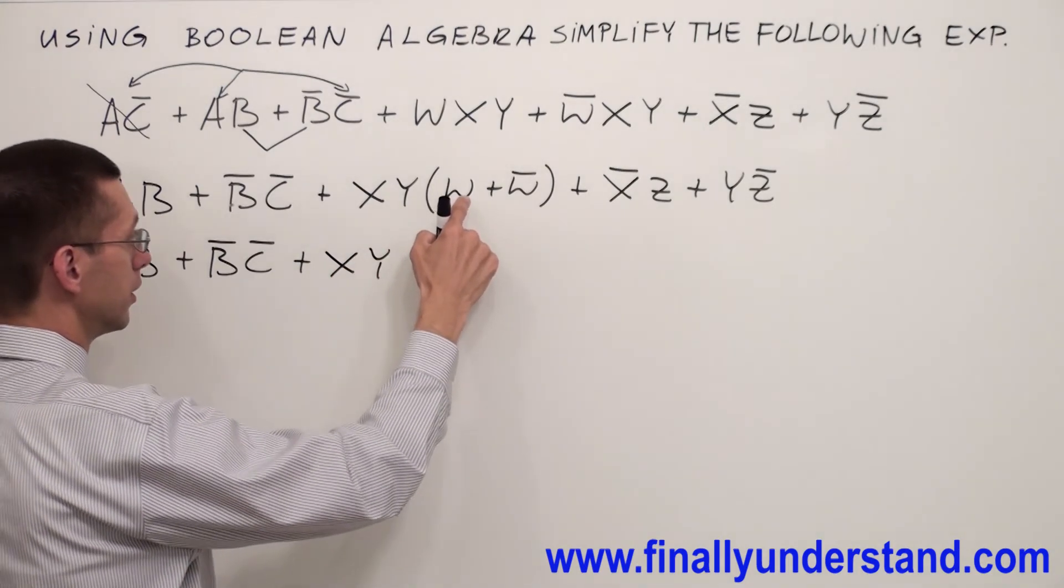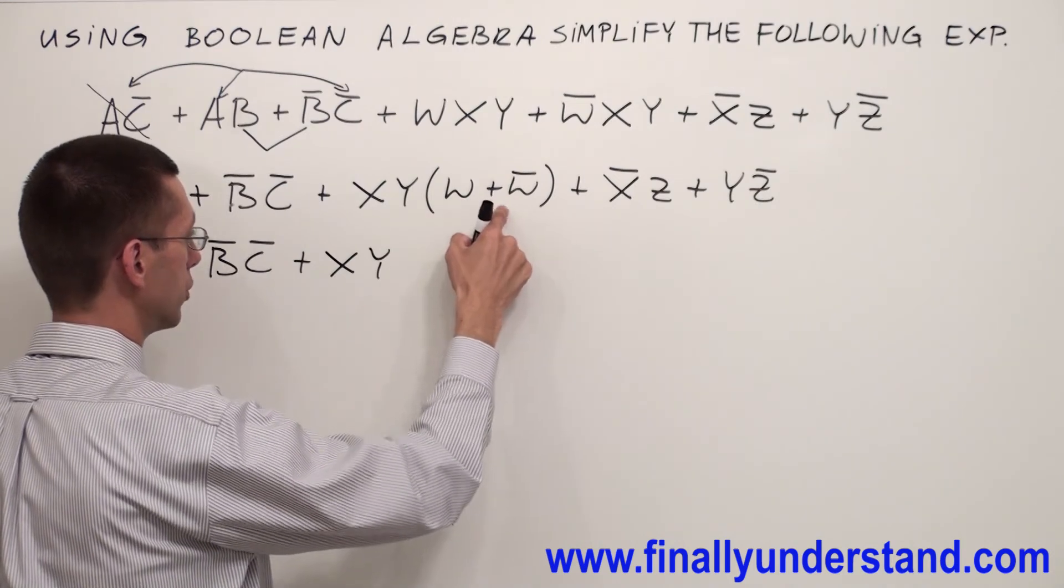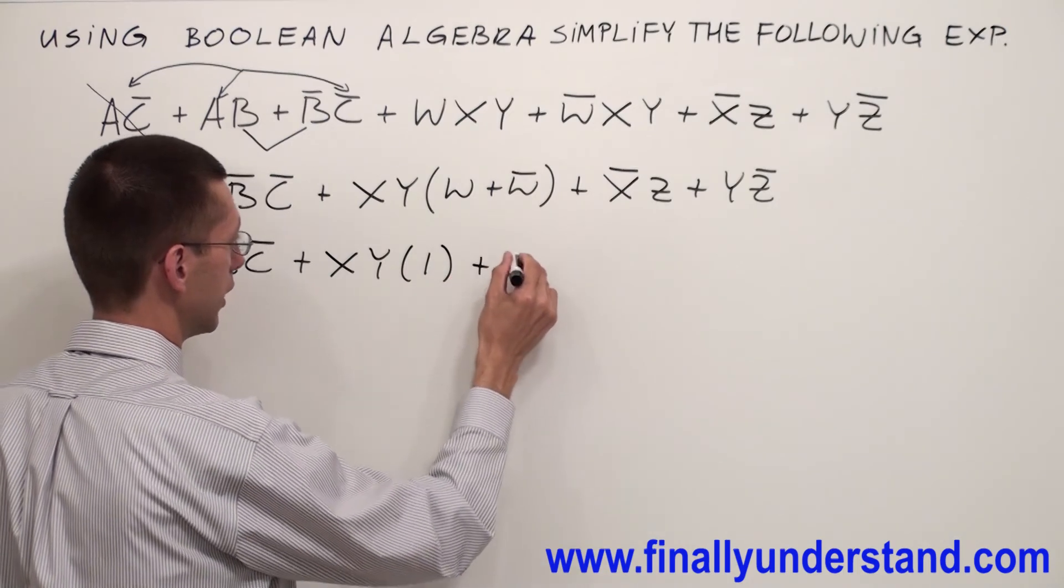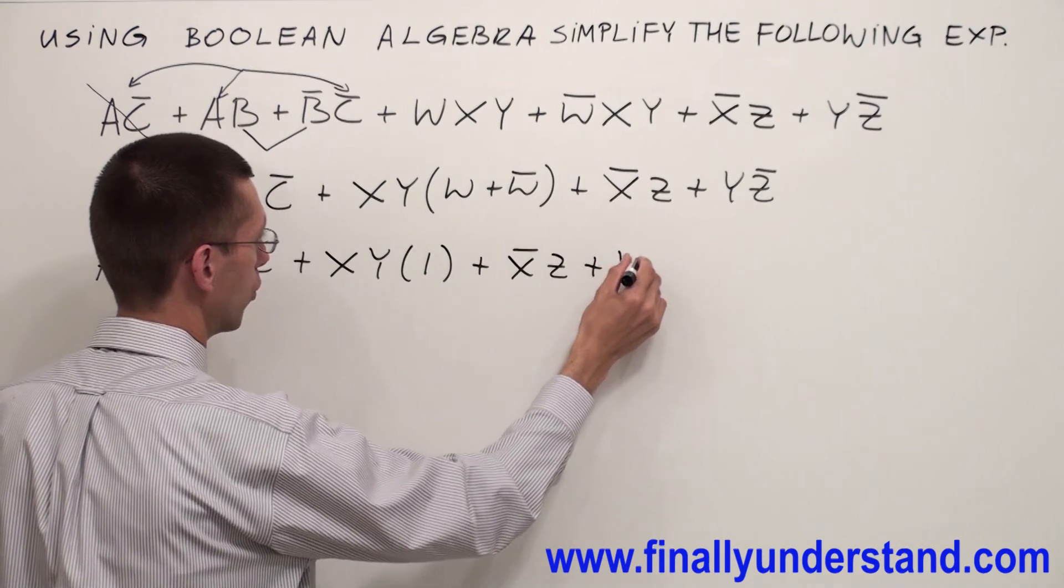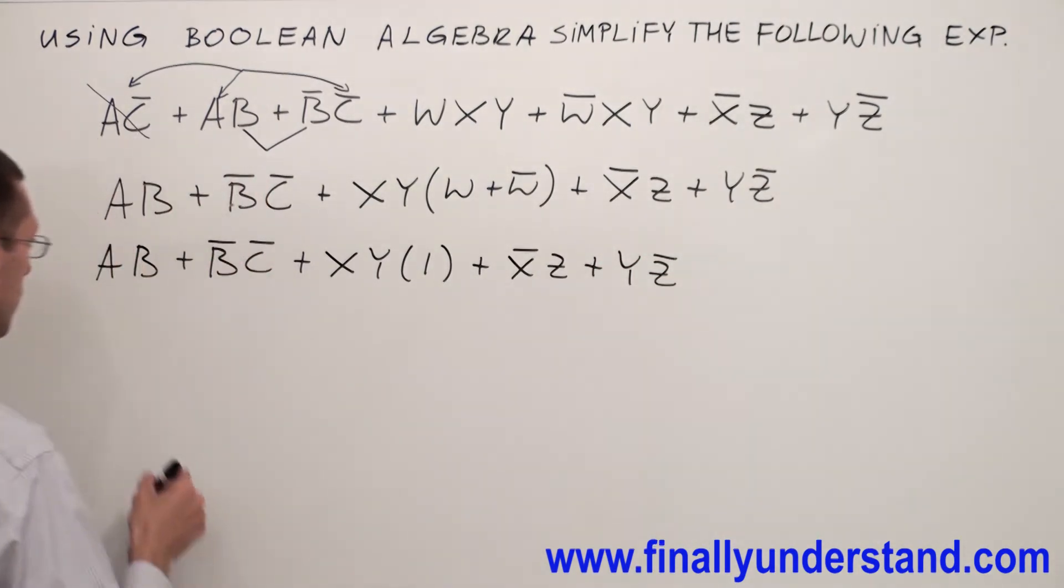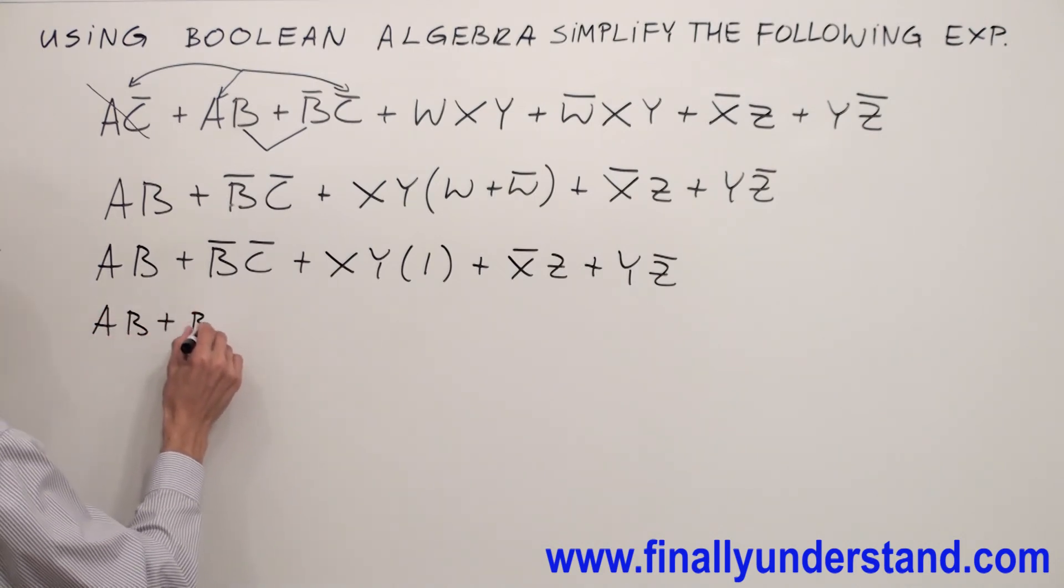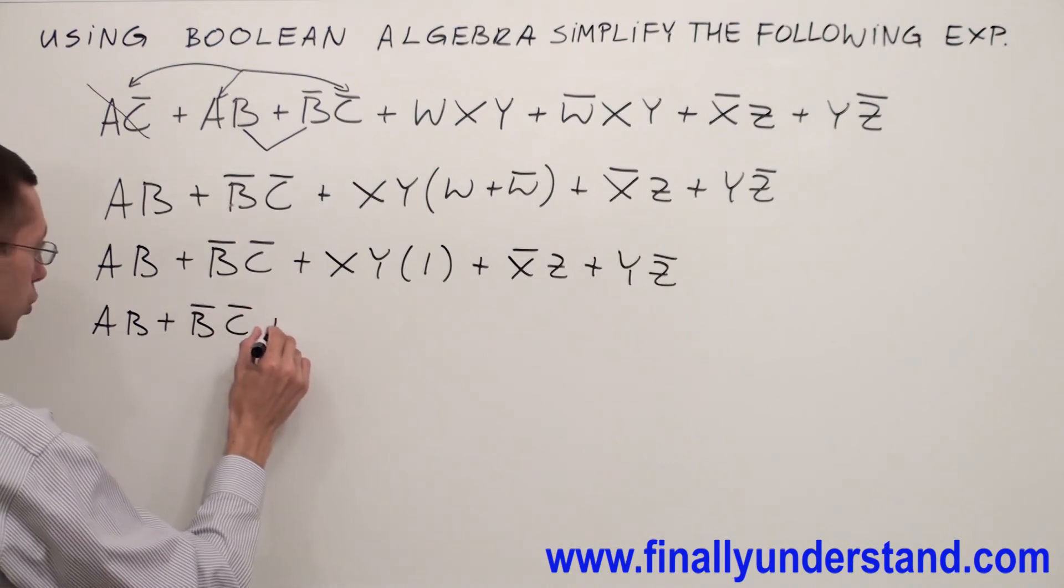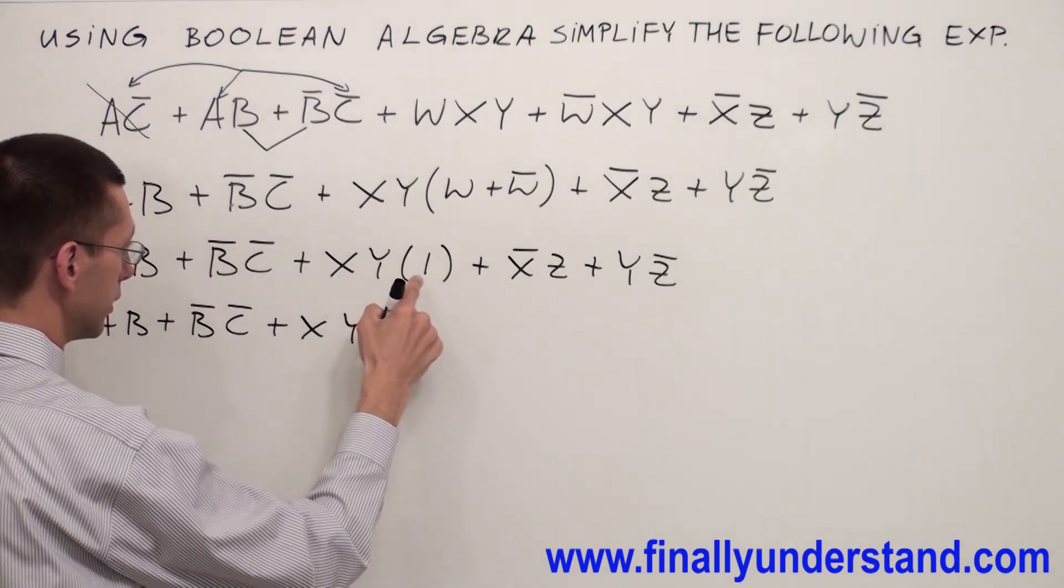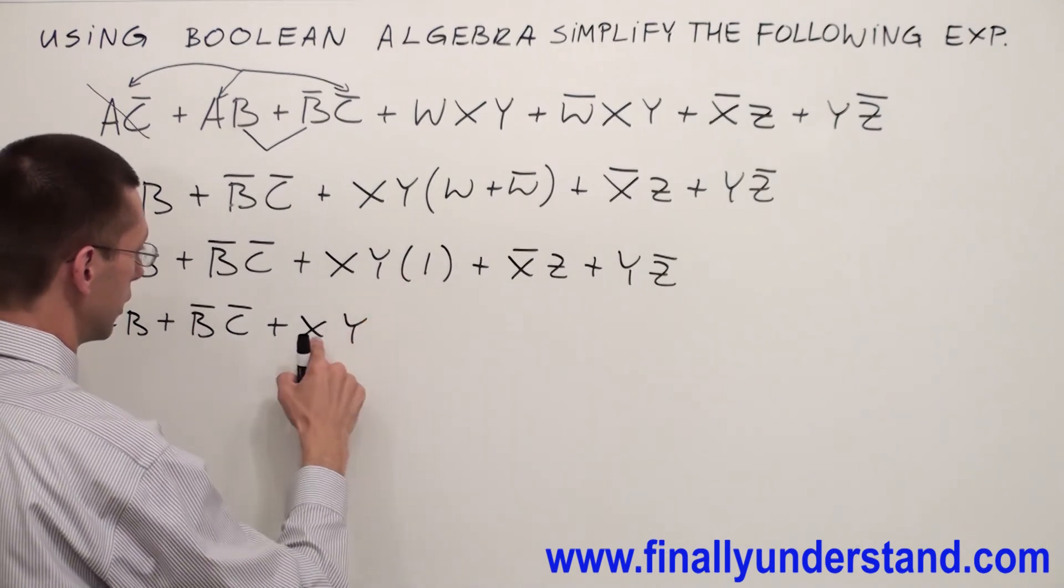Remember that complements or with each other are going to give me always one. And I have or X'Z or YZ'. So let me just copy this down. And I am going to have AB plus BC' or XY. Because XY and 1 or XY times 1 is equal XY.